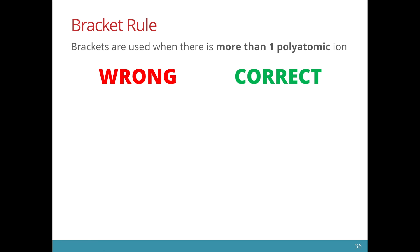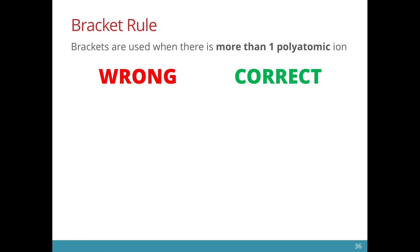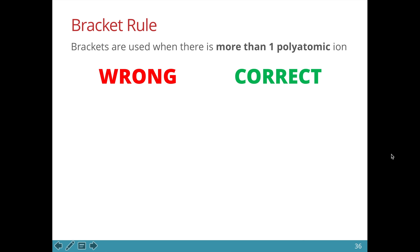So just to recap, these examples on the left are wrong, and on the right side this is what should be written. When there is only one atom in the ion — what we call a monatomic ion — we don't have to put the brackets. This is a very common mistake.